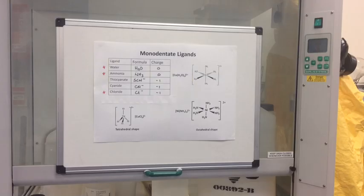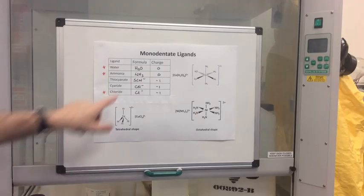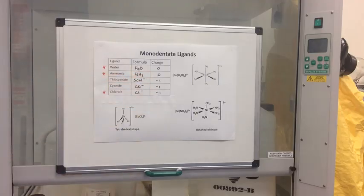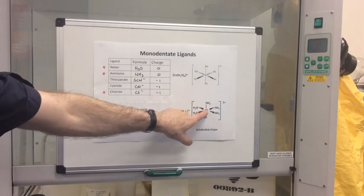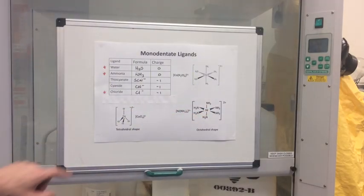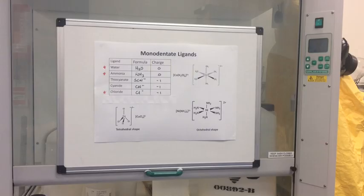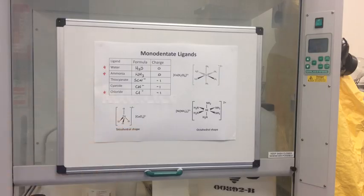We've also got the nickel hexa amine 2+ complex, and again you can see it's the nitrogen that's joined to the nickel, using that lone pair of electrons on the nitrogen. The NH₃ is always written with the nitrogen connected to the nickel. The example on the left is a tetrahedral complex: CuCl₄²⁻. The reason you can only fit four ligands when you have chloride as a ligand is because chloride ions are much larger than ammonia molecules or water molecules. The Cl-Cu-Cl bond angle is 109.5 degrees.